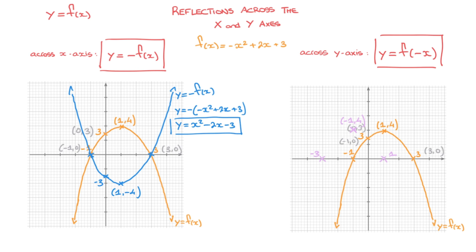Notice that following this transformation, each of the new points we've obtained is the reflection of its corresponding point on y equals f of x across the y-axis. So keeping that in mind and drawing the parabola passing through these points, we obtain the following curve, y equals f of negative x. If ever we need to find the equation of this new curve, all we have to do is copy the expression for f of x but replace every single x we see by negative x, and my advice would be to write that negative x inside a pair of parentheses.